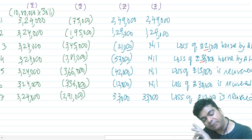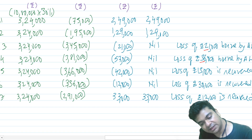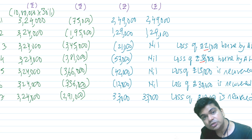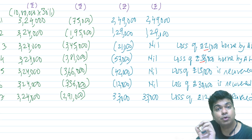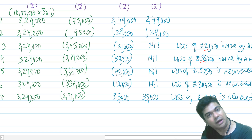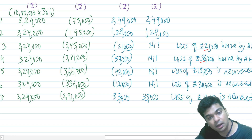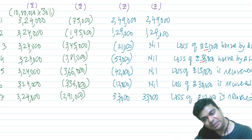For 31st March 2017: 3,24,000 minus 2,91,000 = minority interest of 33,000. The moment it becomes positive, it is shown as is. Cross check: profit is 1,50,000, so 30% is 45,000 belonging to minority shareholders. But 12,000 of loss is still to be recovered, so 45,000 minus 12,000 = 33,000. This 33,000 of profit is shared with the minority shareholders. Loss of rupees 12,000 is recovered.